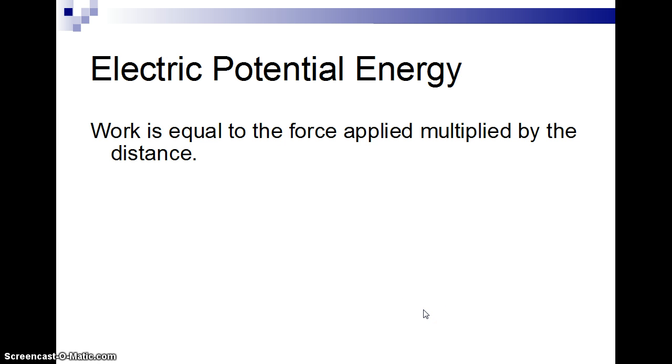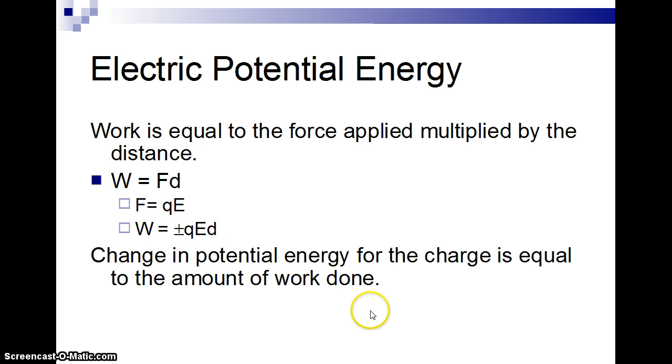The way we calculate work is just force times distance. So, in this case, the force is just the charge of the object multiplied by the electric field. And then plugging that in, the work is going to be plus or minus QE, which is the force times distance. Plus, when you're moving away and you're increasing energy, you're moving against the electric field lines, you're going to be gaining energy, so the work will be positive. If you go along the electric field lines, you're losing energy, so that work is going to be negative.